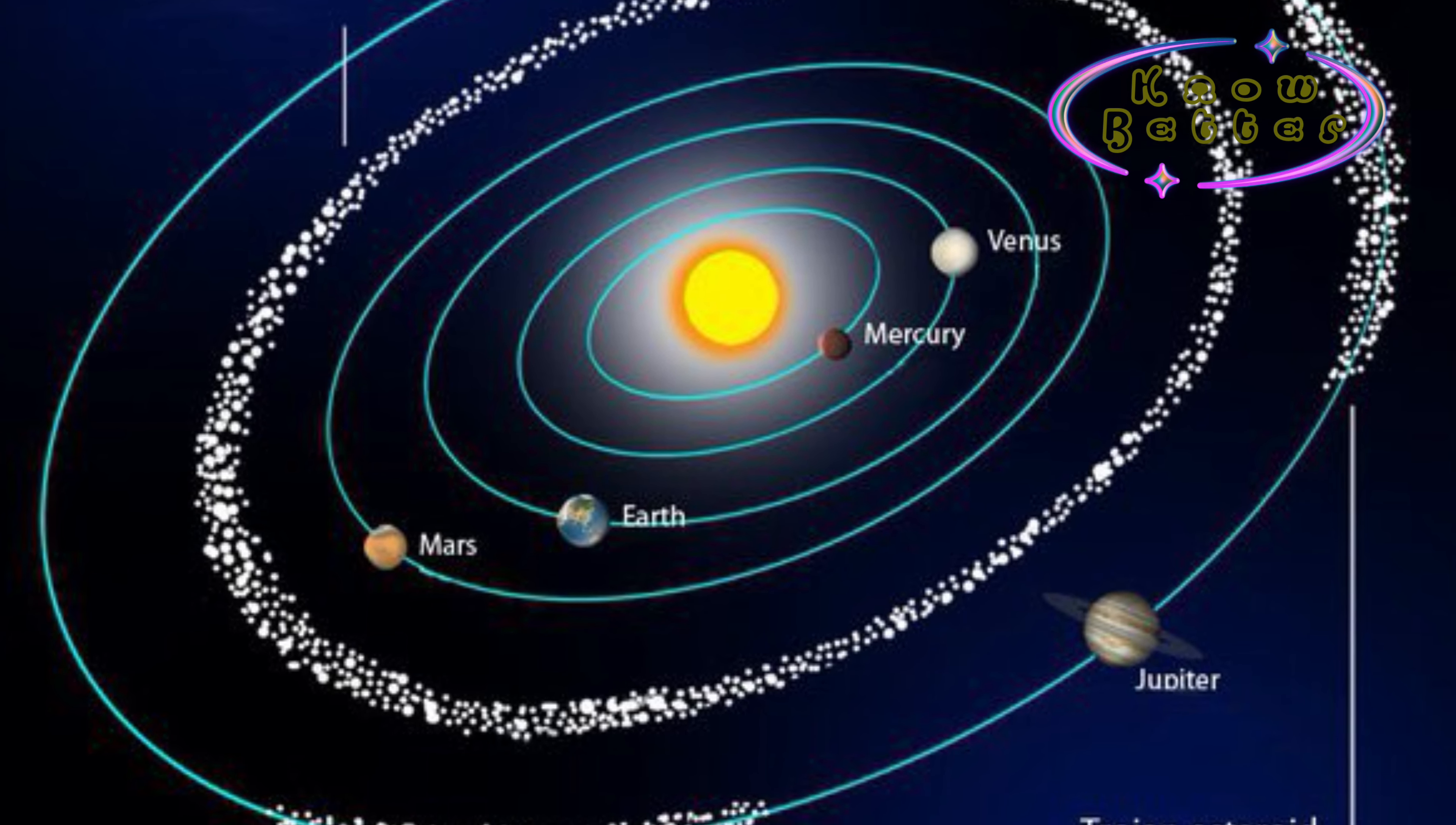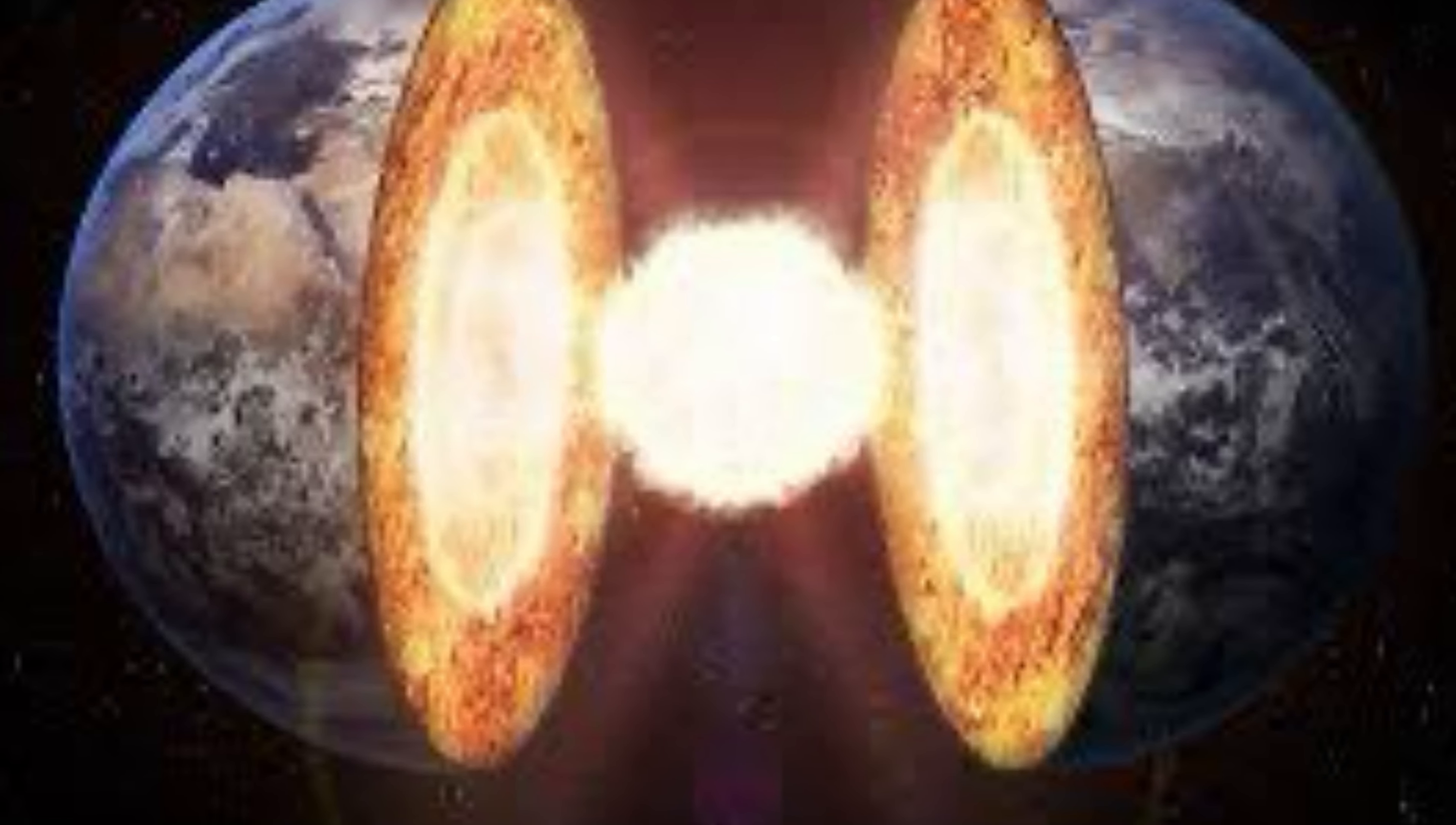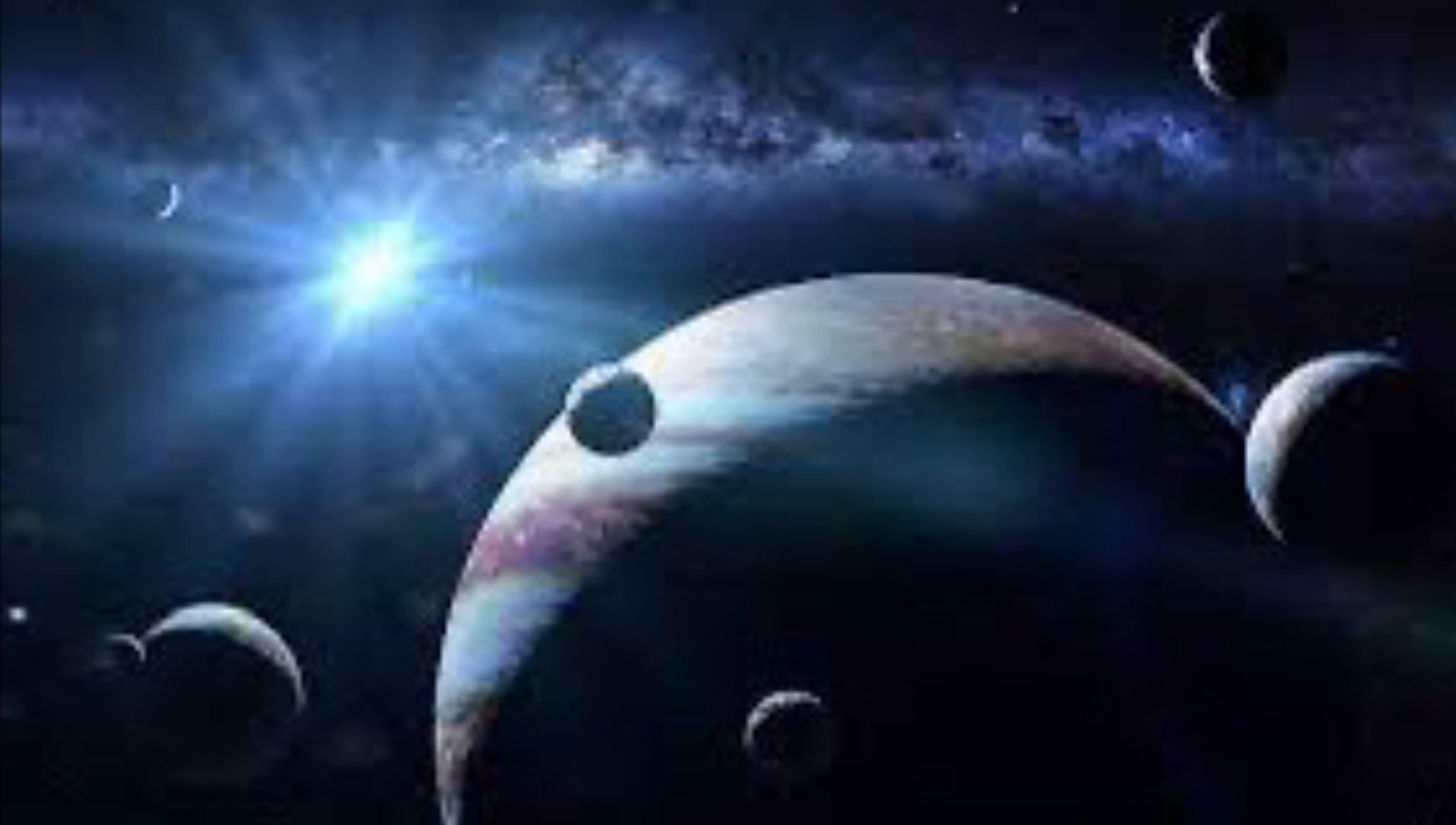Inner planets have molten core and they have very heavy metals inside in molten state. Inner planets have very thin outer atmosphere as well.